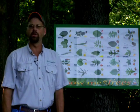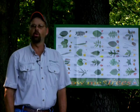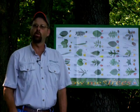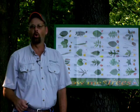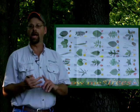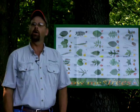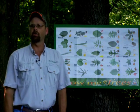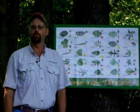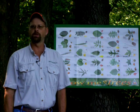Leaf arrangement is either opposite or alternate, with the fewest being opposite. Remember the saying: MAD Horse. That's a maple, an ash, a dogwood, and a horse chestnut or a buckeye. MAD Horse will help you with most opposite leaf arrangements.